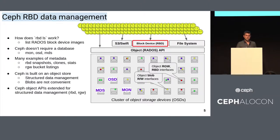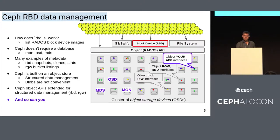Ceph takes an approach by building application-specific interfaces on top of these objects. So in addition to having your standard binary CRUD-type interfaces, each object can store data specifically for RGW or specifically for RBD. Those interfaces are designed specifically for those applications. And this talk is going to describe how you can go about taking advantage of features in Ceph to build your own application-specific interfaces.